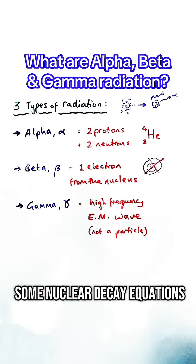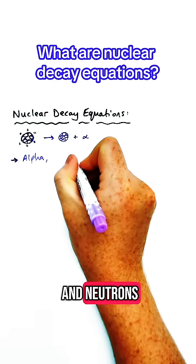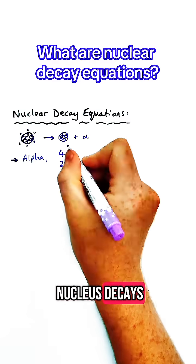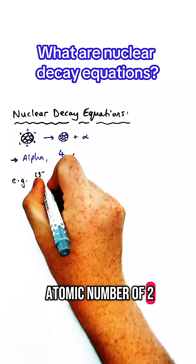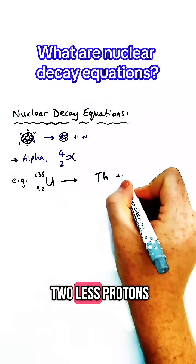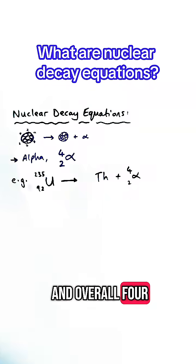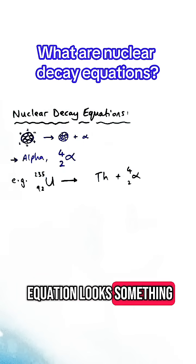Let's look at some nuclear decay equations, which show what happens to the number of protons and neutrons when a nucleus decays. Because an alpha particle has a mass number of 4 and an atomic number of 2, the element that's left once it's been emitted has to have two less protons and overall four less protons and neutrons in its mass number.